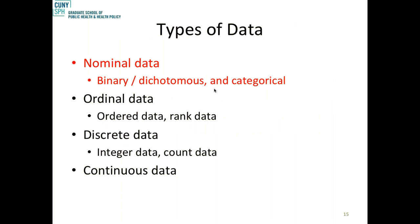Let's talk about the types of data. Nominal data is basically names. So it could be gender — male or female — or left-handed or right-handed. Those two happen to be binary or dichotomous, meaning there are only two values. There are a lot of things like that: disease or no disease, HIV positive or HIV negative. A lot of nominal data turns out to be binary — that's a special subcategory.